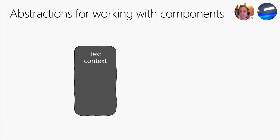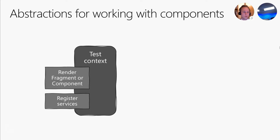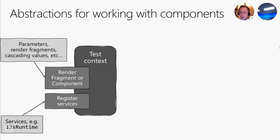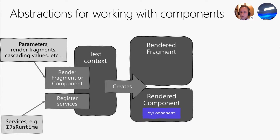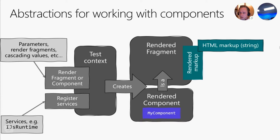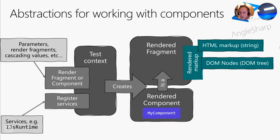The first abstraction is the test context. It allows us to register any service we want to pass to the component on the test, and it allows us to render a component or a fragment. We first register any services it might need, for example the JSRuntime, then we ask the test context to render it with any parameters we want to pass to it. The result is a rendered component or rendered fragment. The render fragment gives us access to the rendered markup as a raw string or as DOM nodes, provided by the AngleSharp library, which is a complete implementation of the HTML5 DOM API.